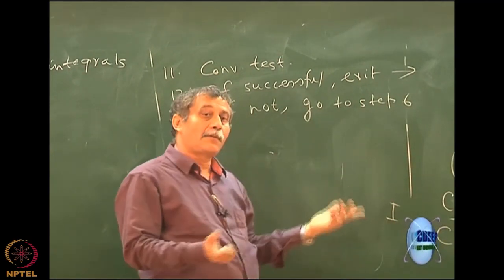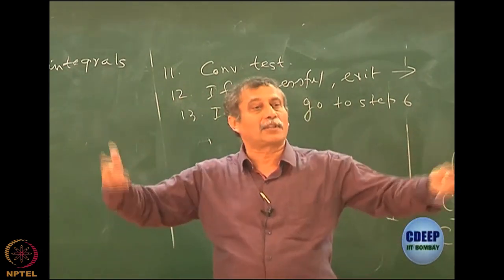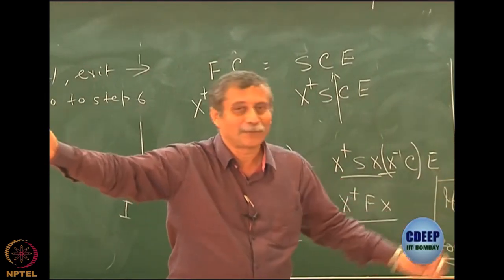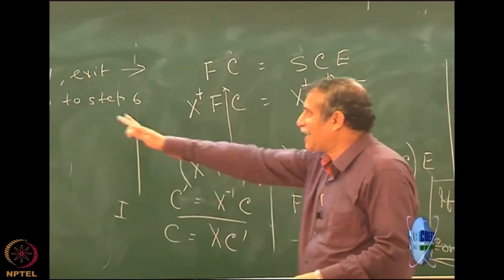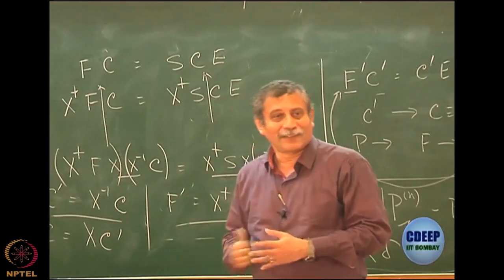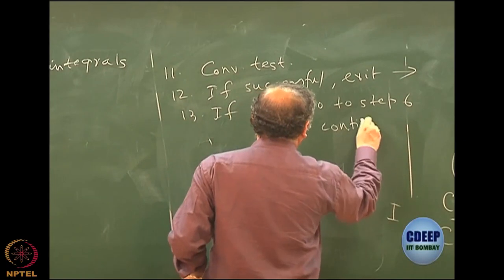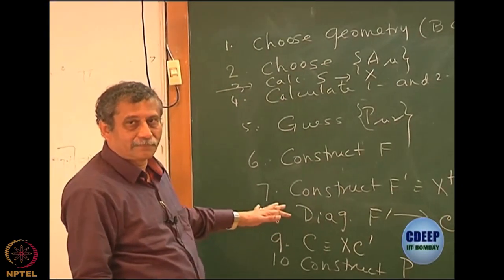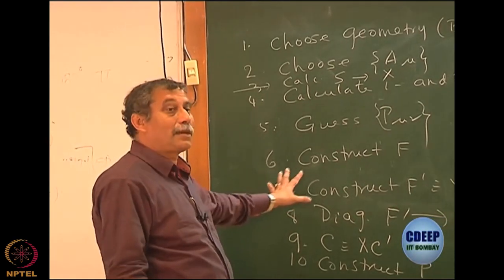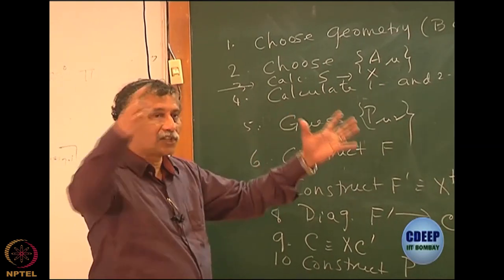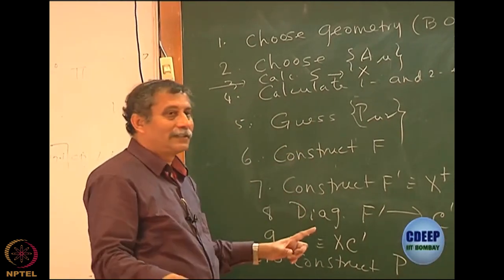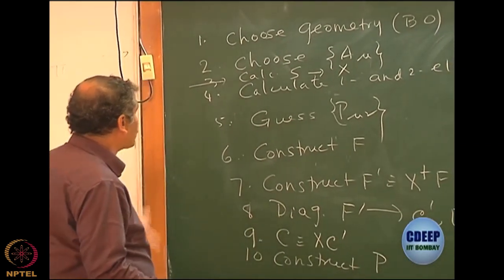These steps summarize the entire SCF algorithm. If you understand this, you can write at least a flow chart, if not a full program. Each step is a distinct computational sub-task. I will not write S^{-1/2} explicitly anymore; I write it as X, keeping the formulation general, since the Löwdin choice is just one option among several.